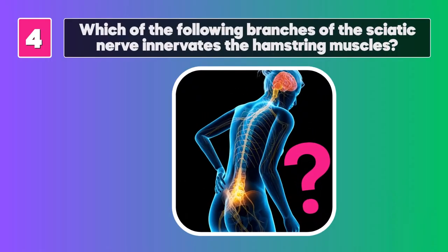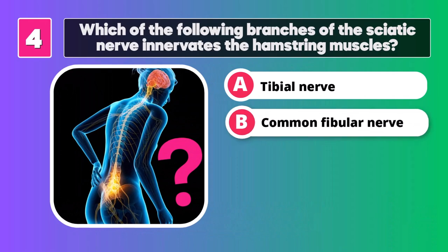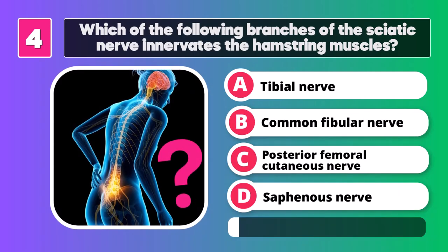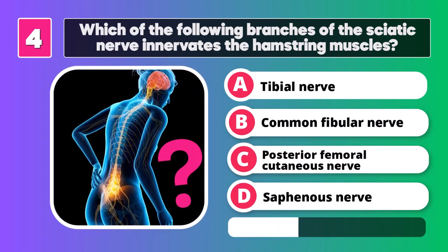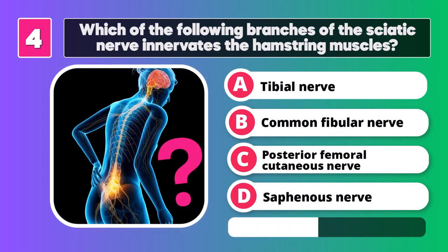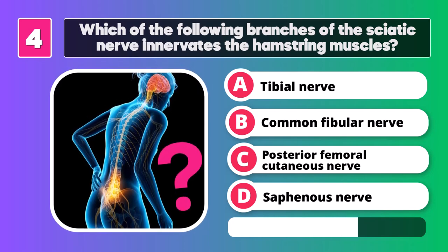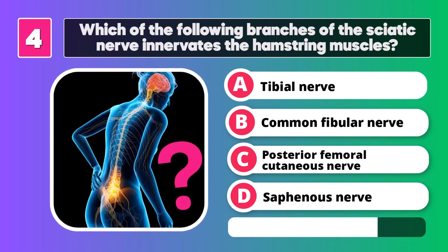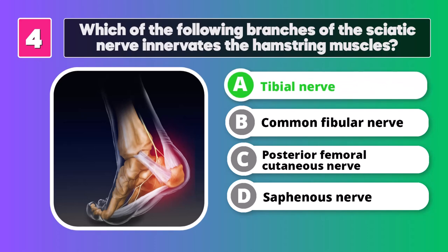Which of the following branches of the sciatic nerve innervates the hamstring muscles? Tibial nerve.